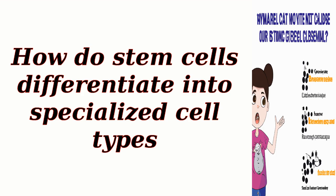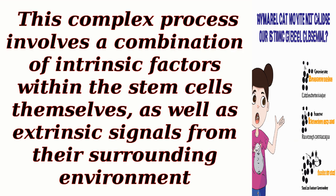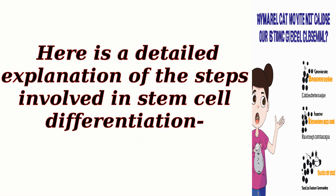How do stem cells differentiate into specialized cell types? Stem cells have the ability to differentiate into various specialized cell types through a process called cell fate determination. This complex process involves a combination of intrinsic factors within the stem cells themselves, as well as extrinsic signals from their surrounding environment. Here is a detailed explanation of the steps involved in stem cell differentiation.